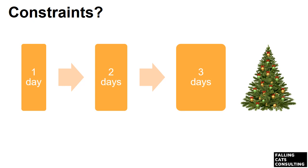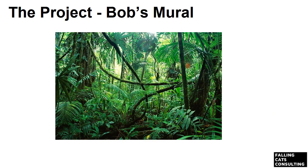A constraint is any restriction that defines a project's limitations. Examples are the time a task is expected to take, and public holidays where no one will be working. Now we have the definitions done, let's look at our example project.